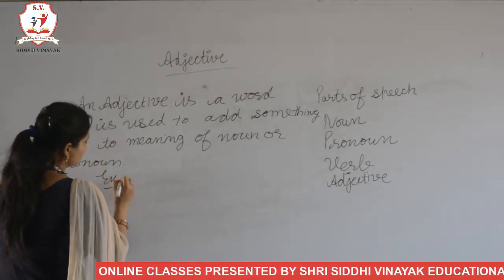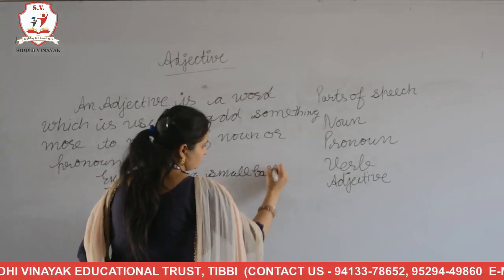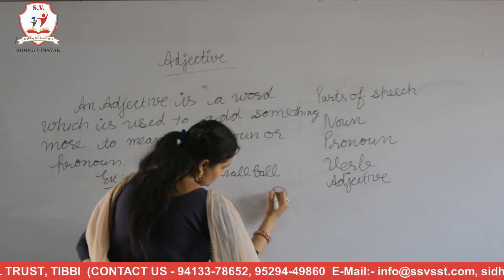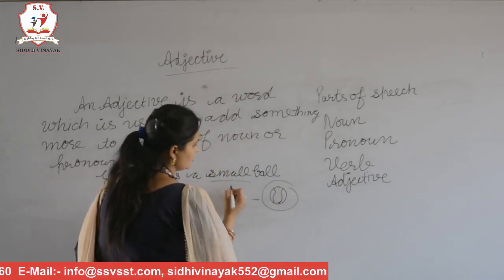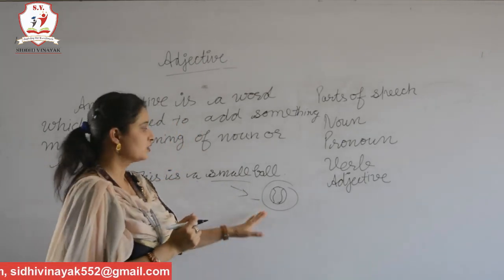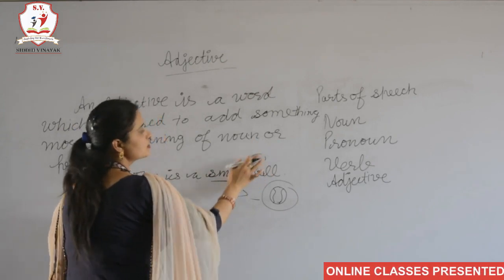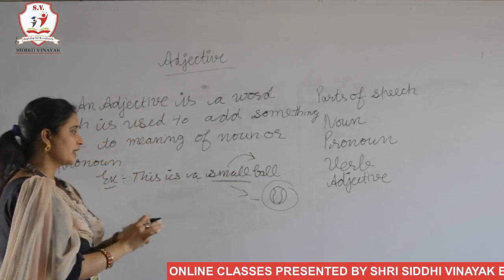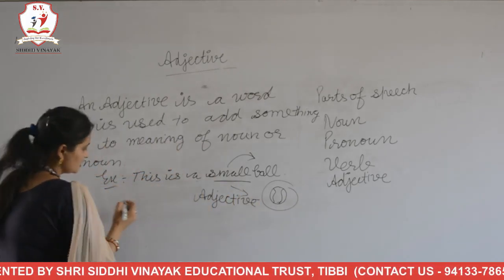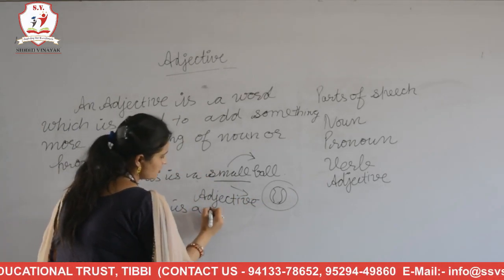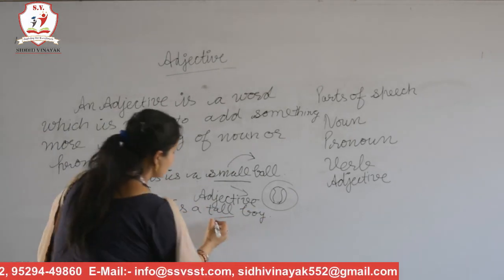Let's see examples. This is a small wall. With the help of 'small' we get to know the wall is small, so 'small' is an adjective. Another example: Ram is a tall boy. What is the quality of Ram? Tall. So 'tall' is an adjective.